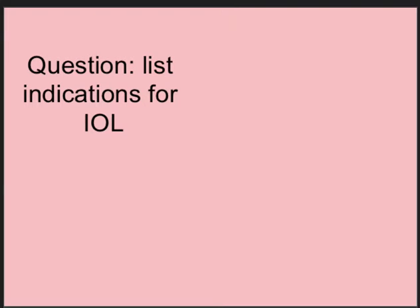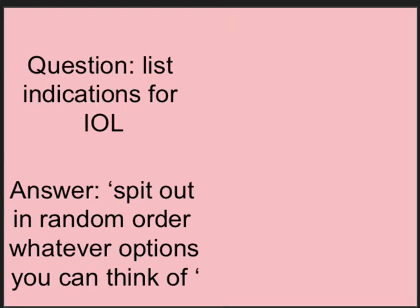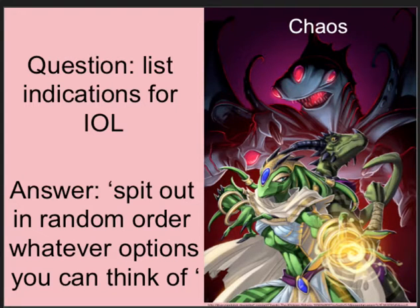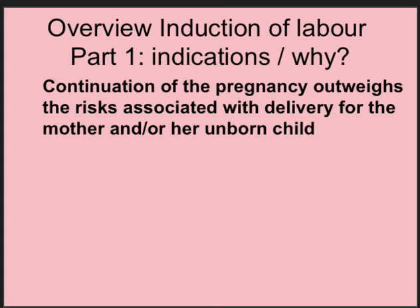When I ask students to list the indications for induction of labour, quite often the answer is that students try to impress me by spitting out in random order whatever option they can think of. That's one way to approach the question, but it is somewhat chaotic and probably not the best way to do it. The most important principle is that inducing labour should be done when continuation of the pregnancy outweighs the risk associated with delivery — sometimes even preterm delivery — for the mother and/or her unborn child.